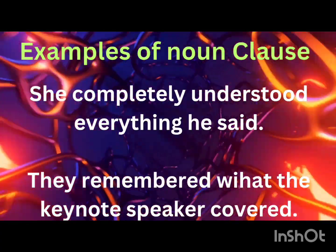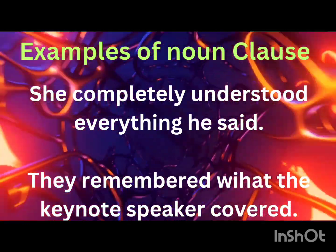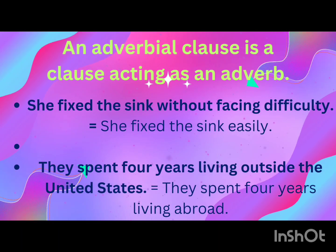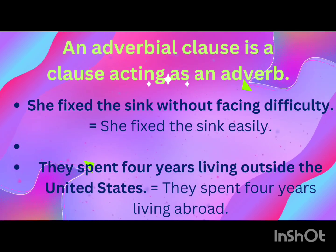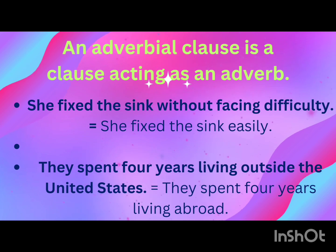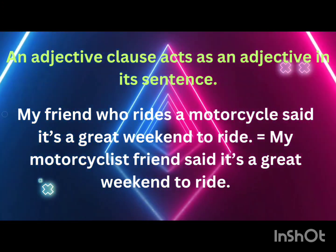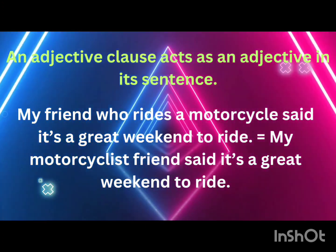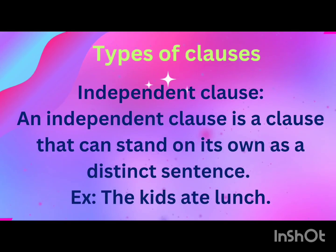Examples of noun clauses: 'She completely understood everything he said.' 'They remembered what the keynote speaker covered.' An adverbial clause is a clause acting as an adverb — for example, 'She fixed the sink without facing difficulty,' meaning she fixed the sink easily. 'They spent four years living outside the United States,' meaning they spent four years living abroad. An adjective clause acts as an adjective in its sentence — for example, 'My friend who rides a motorcycle said it's a great weekend to ride,' meaning my motorcyclist friend said it's a great weekend to ride.